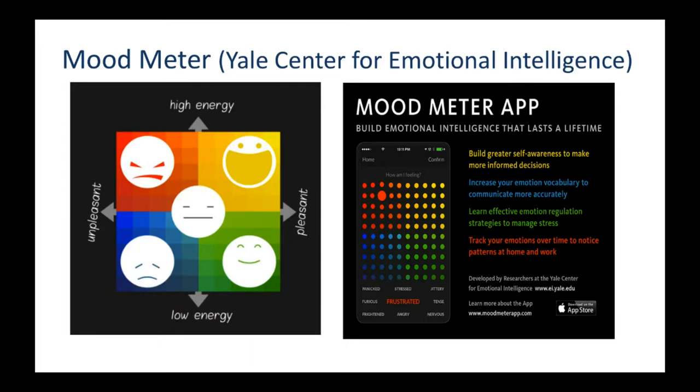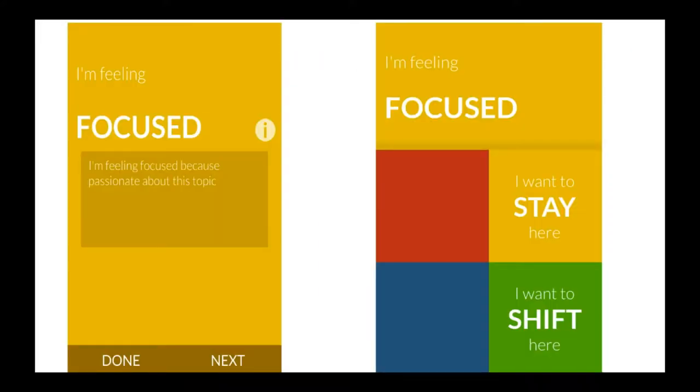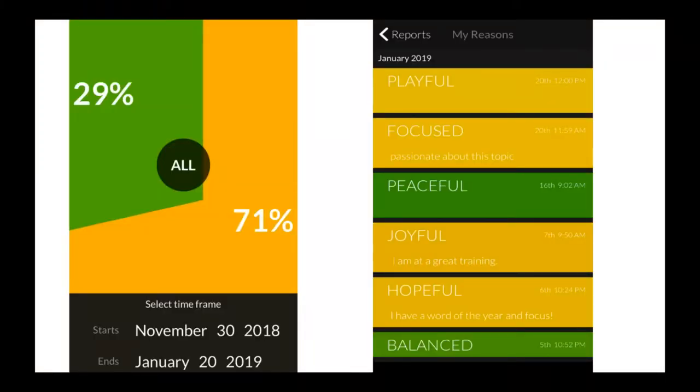Here's the mood meter. It goes from high to low and pleasant to unpleasant in quadrants — you pick out how you're feeling and it gives you different names for your emotions. You click on one, like 'focused,' and get to say why. It tells you where you spend most of your time emotionally. It gives a list of all the emotion words you've used. Peter Drucker says if you measure it, you can manage it — that's why this tool helps.